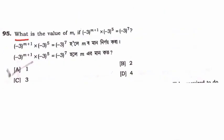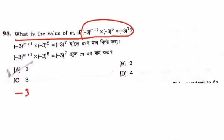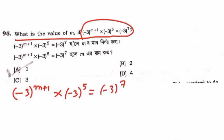What is the value of M if minus 3 to the power M plus 1, multiplied by minus 3 to the power 5, equals minus 3 to the power 7? So we have minus 3 to the power M plus 1, into minus 3 to the power 5, equals minus 3 to the power 7.